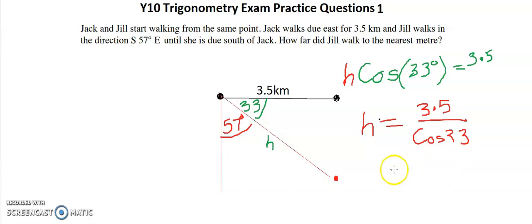And that gives us the distance for our hypotenuse, which is 4.17. Now it says to the nearest meter, so I'll just say it is 4 meters.